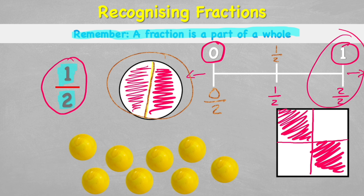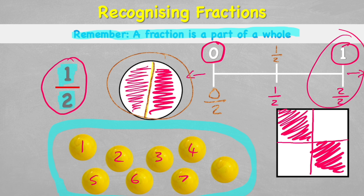We can also look at half of an amount. Here we have eight marbles. To find half, all these marbles together are one group. If I split them in half I need to make two equal piles, cutting down the line gives two piles of four — one, two, three, four and one, two, three, four.